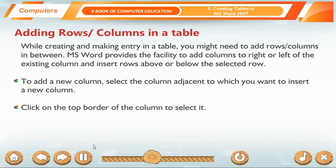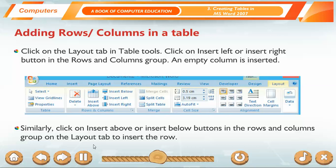Adding rows or columns in a table. While creating and making entry in a table, you might need to add rows or columns in between. MS Word provides the facility to add columns to right or left of the existing column and insert rows above or below the selected row. To add a new column, select the column adjacent to which you want to insert a new column. Click on the top border of the column to select it. Click on the Layout tab in Table Tools. Click on Insert Left or Insert Right button in the Rows and Columns group. An empty column is inserted. Similarly, click on Insert Above or Insert Below buttons in the Rows and Columns group on the Layout tab to insert the row.